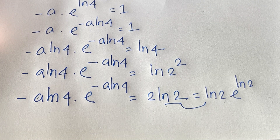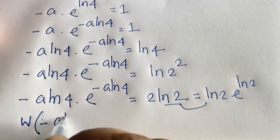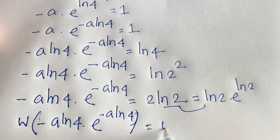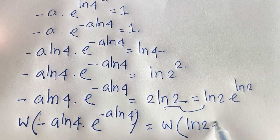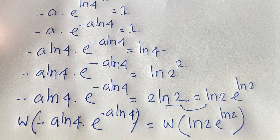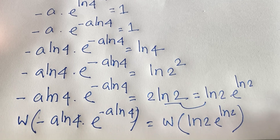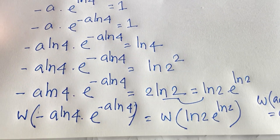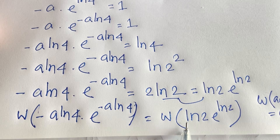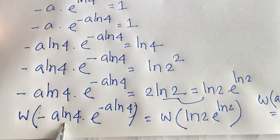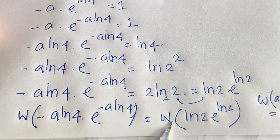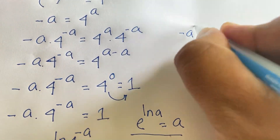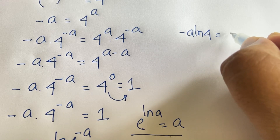Now I apply the Lambert W function. Recall that W(a e to the power a) equals a. Since the left side has the form f times e to the power f and the right side has the same form, we can conclude that minus a ln 4 equals ln 2.